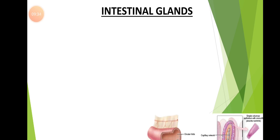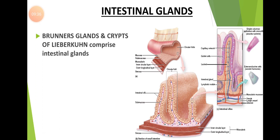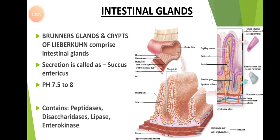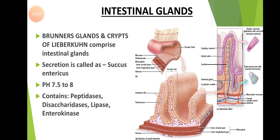Coming to the intestinal glands. Intestinal glands are present in the walls of the intestine. The walls of the intestine contain Brunner's glands and crypts of Lieberkühn. These two types of glands secrete intestinal juice, also called succus entericus. The pH of this succus entericus is 7.5 to 8. It contains peptidases, disaccharidases, and lipases.